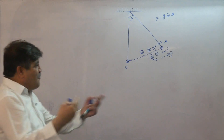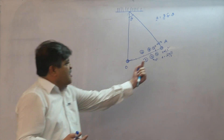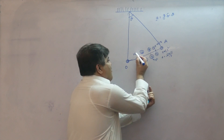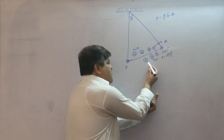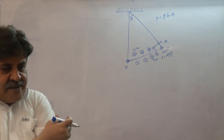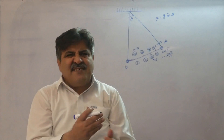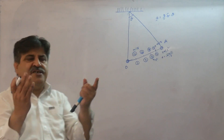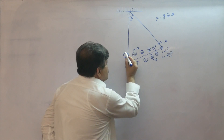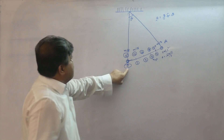Continuing with the same idea, acceleration decreases to two meters per second squared because theta keeps decreasing. Two meters per second squared means a change of two in one second, so velocity becomes fourteen. Then acceleration is one meter per second squared, and velocity becomes fourteen plus one equals fifteen meters per second. At the mean position, theta becomes zero, sine of zero is zero, so acceleration becomes zero.